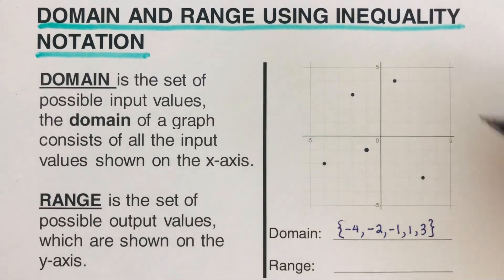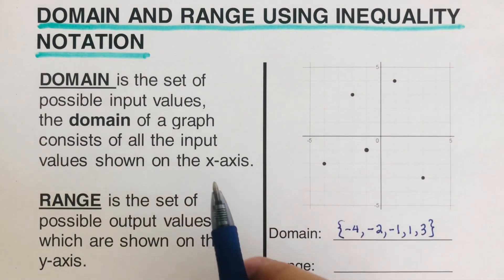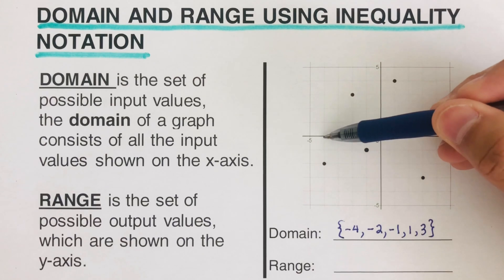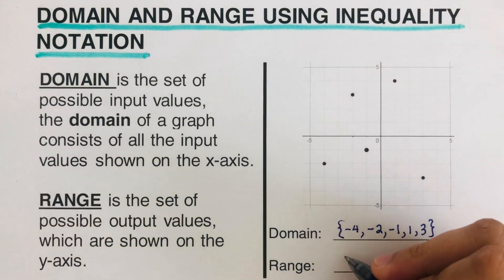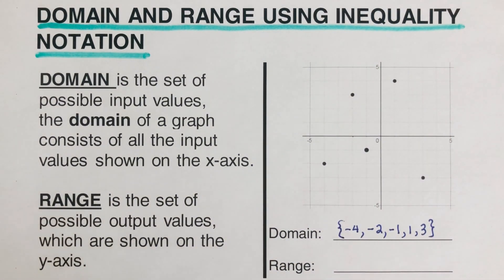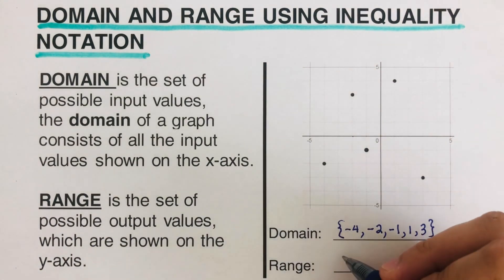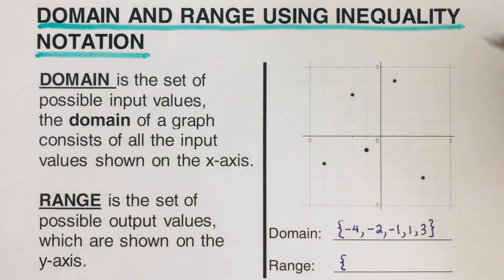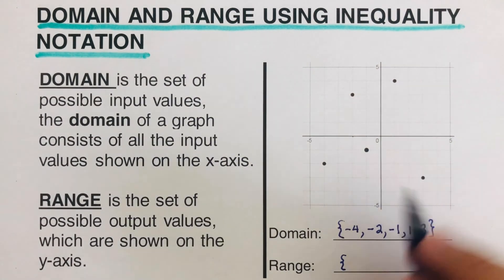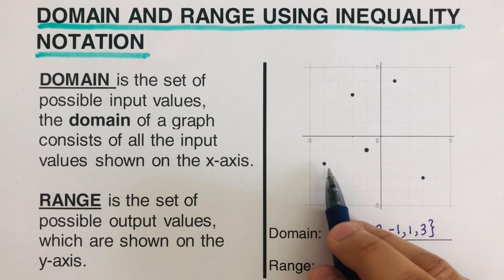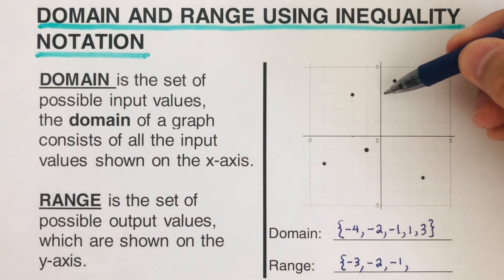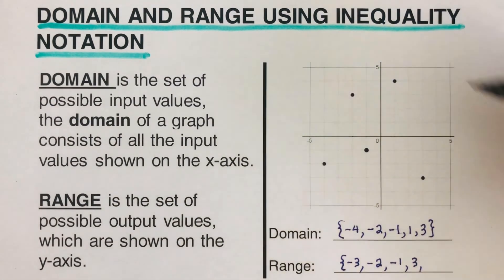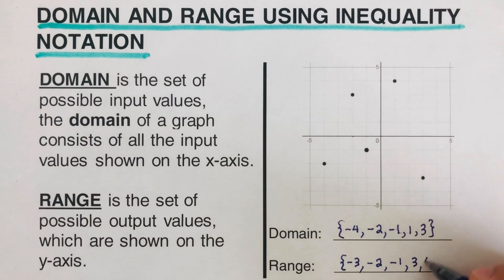So these are the domain. Domain refers to the x values on the x-axis — this value, this value, this value, and this value. Now for the range, we are looking for all the possible outputs, which are shown on the y-axis. So in this case, we start from the bottom: we have negative three, then negative two, then negative one, and up here we have positive three and positive four.